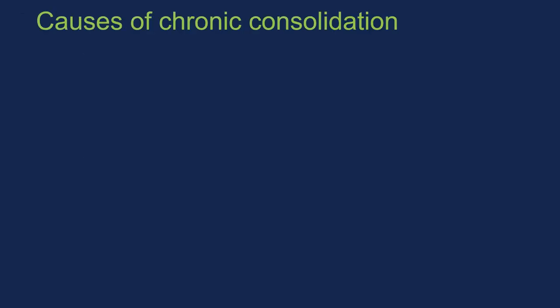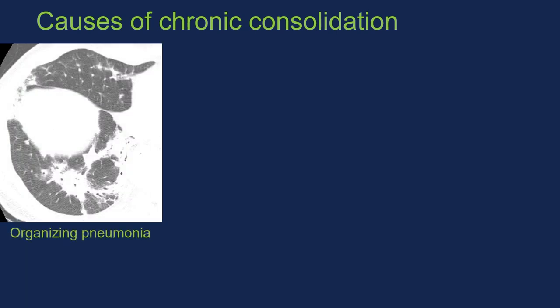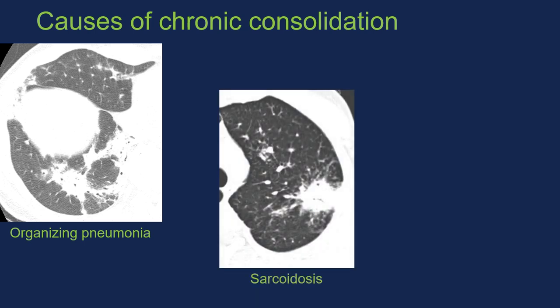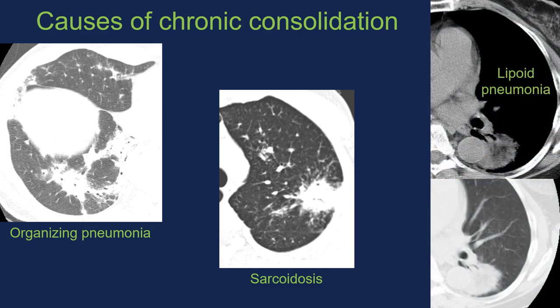On imaging, there may be typical features of one of these entities. Organizing pneumonia often has characteristic features of patchy, focal, often rounded areas of peribronchovascular and subpleural consolidation with irregular margins and architectural distortion. Sarcoidosis presenting with consolidation often shows tiny nodules around the edges of the consolidation and perilymphatic nodules elsewhere. Lipoid pneumonia can have diagnostic features — on soft tissue windows, you can see fat attenuation in the areas of consolidation.